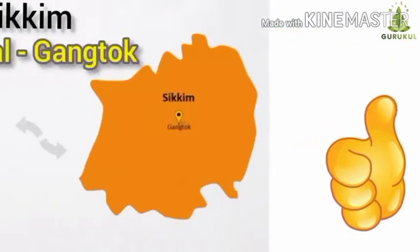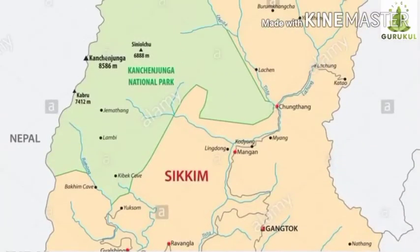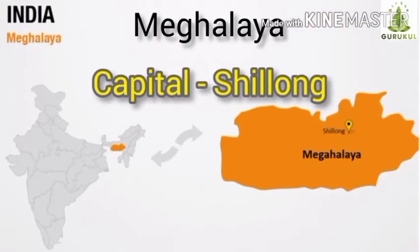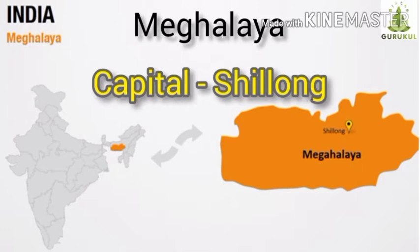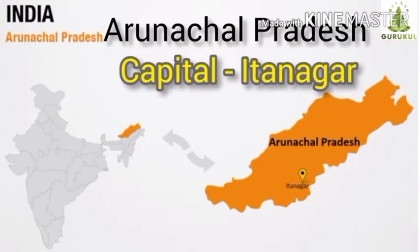Now we will see the east side map of India. First, the state Sikkim — capital is Gangtok. The highest peak of India, Kanchanjunga, is situated in this state. Next, West Bengal — capital is Kolkata. Meghalaya — capital is Shillong. Assam — capital is Dispur. Then Arunachal Pradesh — capital is Itanagar. This state is known as the land of the rising sun.